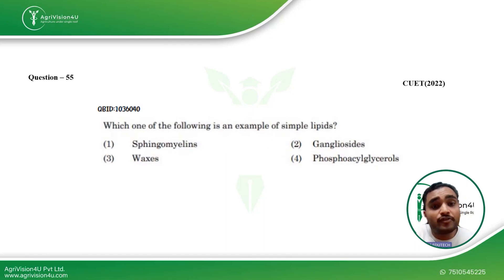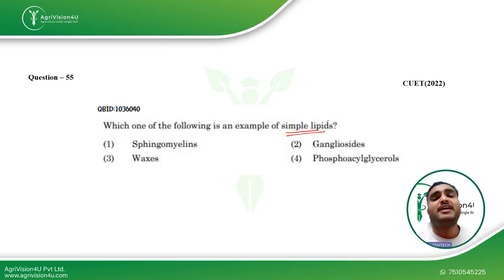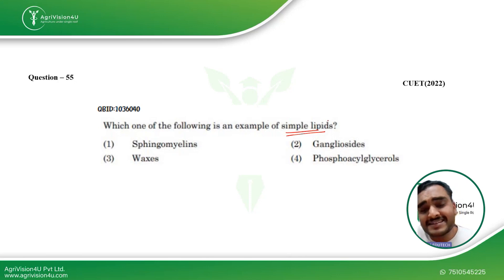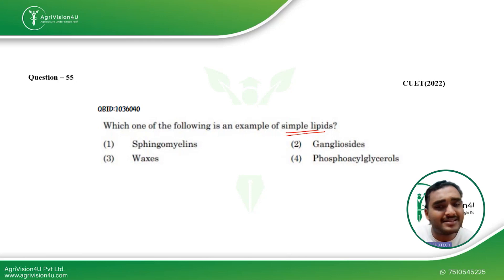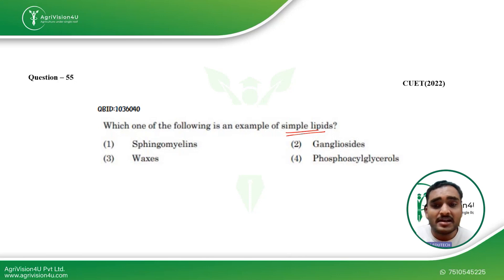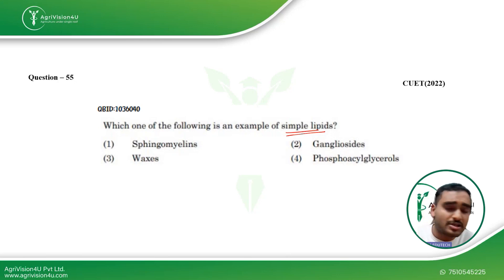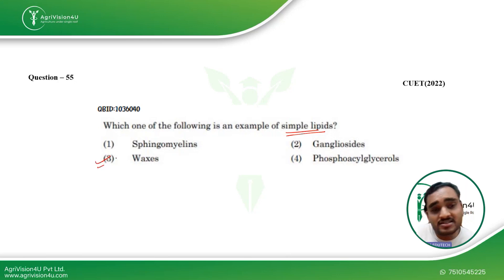Which of the following is an example of simple lipids? Simple lipids are found in their existing states in nature. Sphingomyelins are not, gangliosides are not, phosphoacylglycosides are not. Waxes is the correct answer for this question.